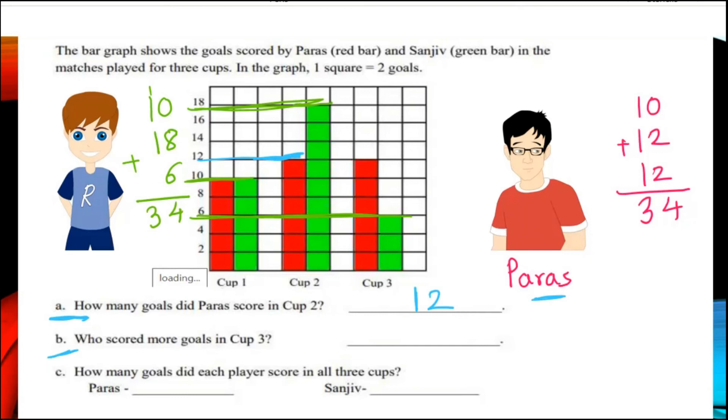Let us solve second question. Who scored more goals in Cup 3? That means in third match for winning Cup 3. Who scored more goals? As from the figure we can see red bar is the higher one. That means Paras achieved more goals in Cup 3, that is in match 3.